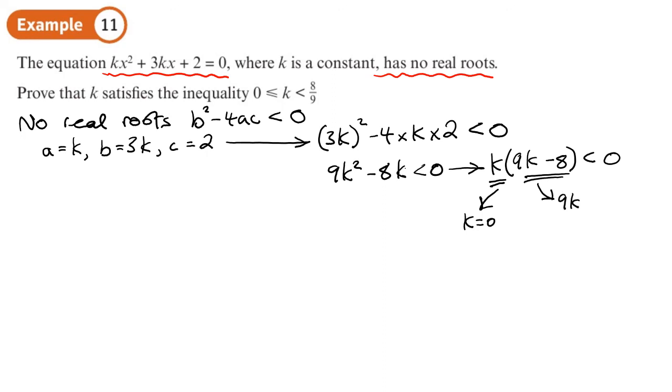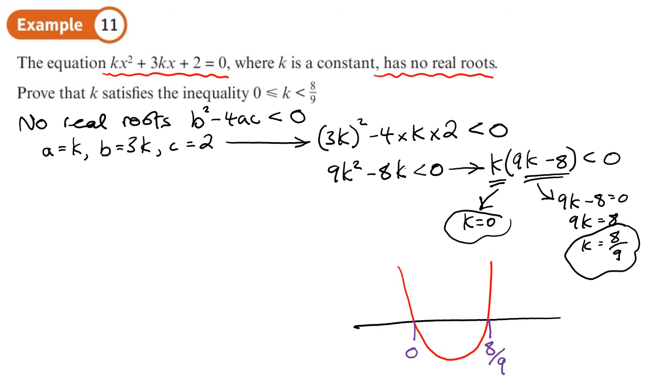9k equals 8 gives the other critical value: k equals 8 over 9. Let's sketch this quadratic with critical values at 0 and 8 over 9. When is it less than 0? Down here, between these values. So that will only be less than 0 when k is between 0 and 8 over 9. When it's greater than 0 and less than 8 over 9.